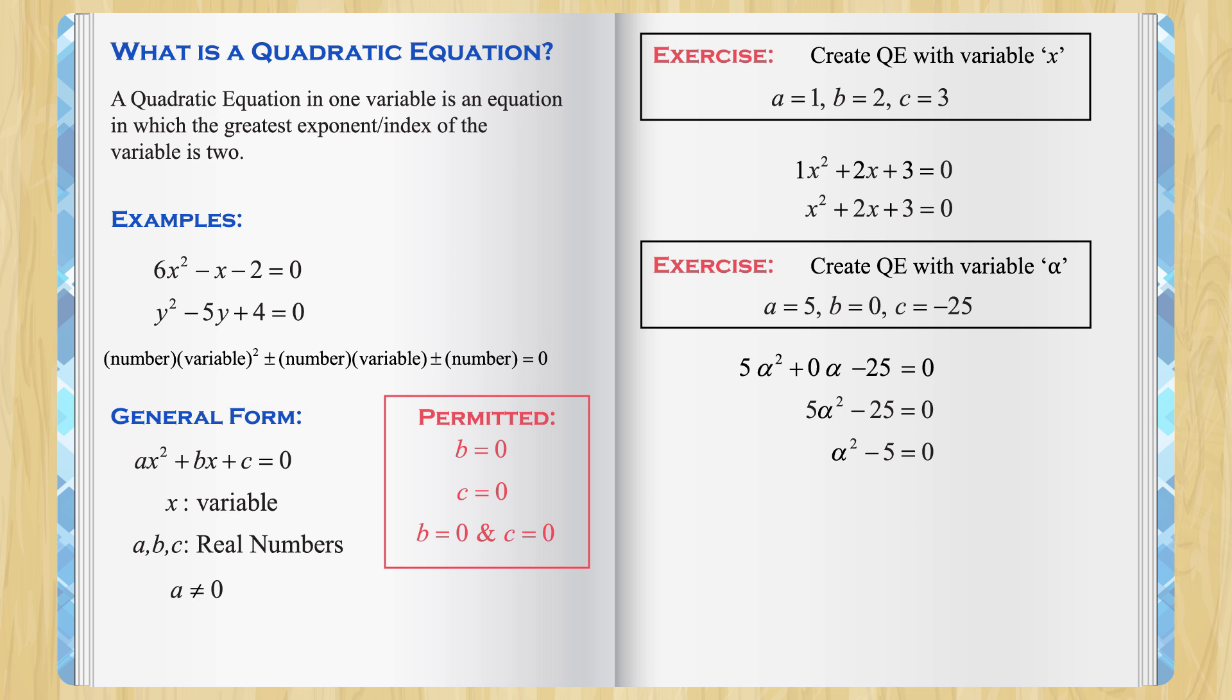The general form has only positive signs because negatives come from a, b and c.